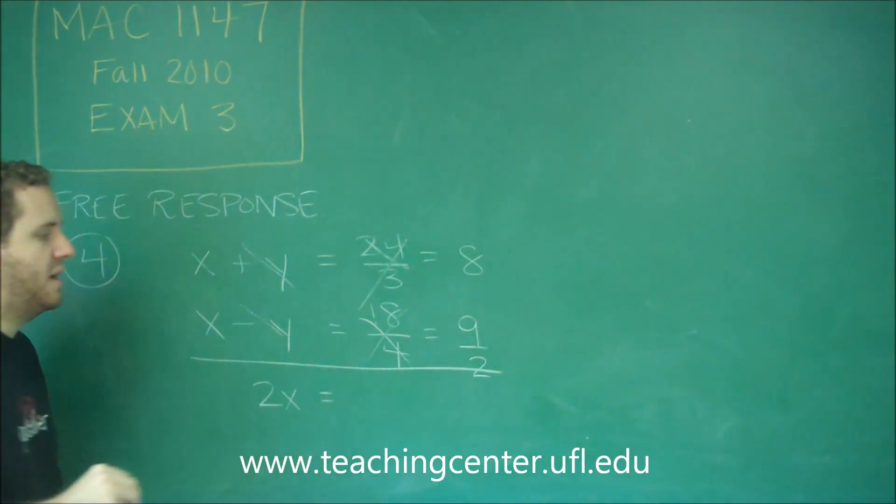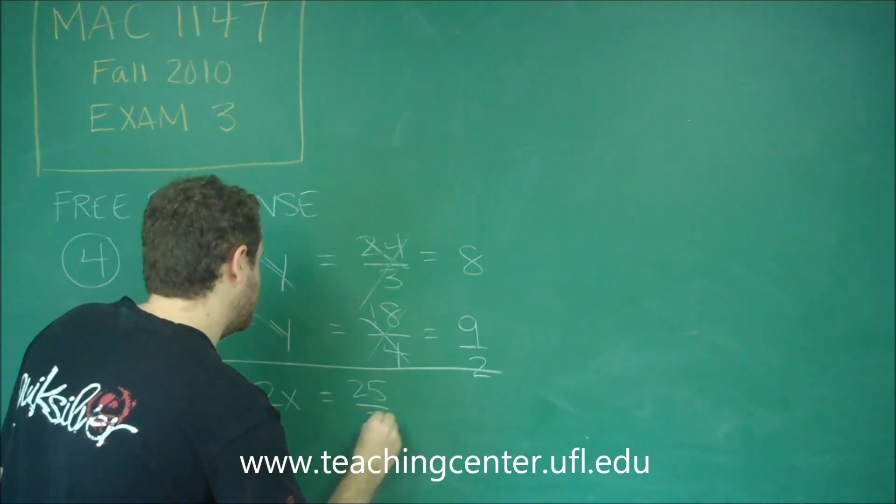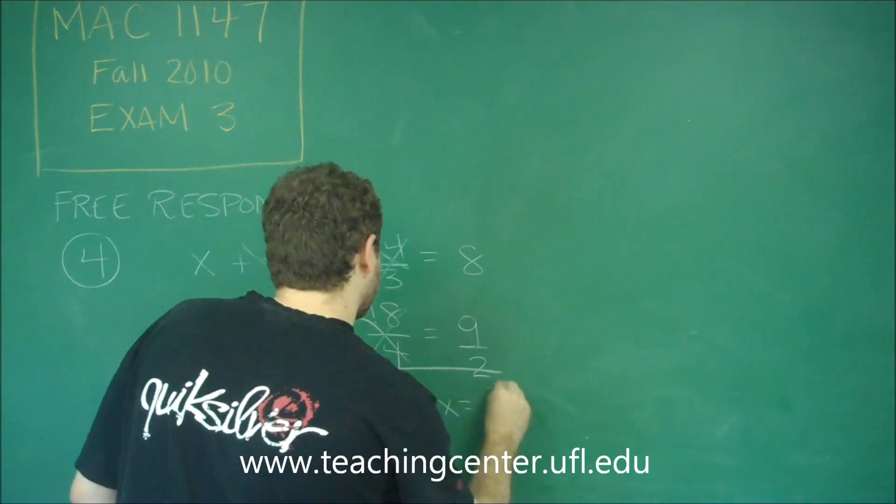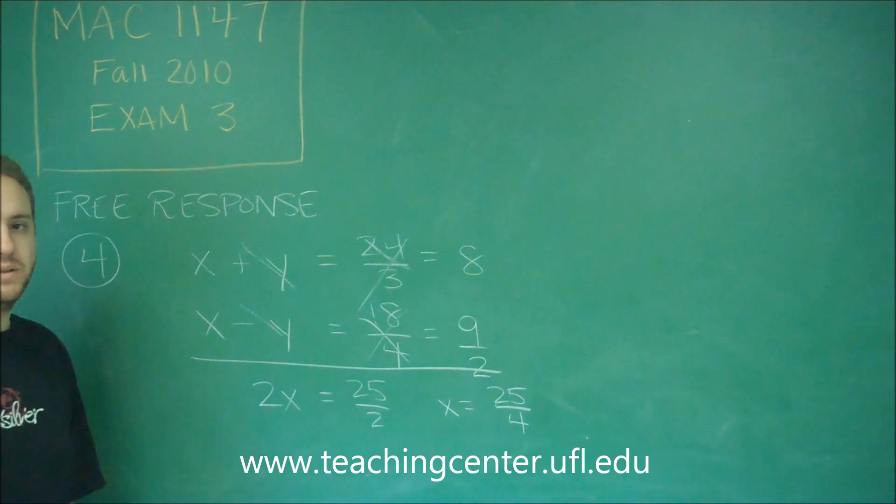So if you want to convert that to all as a fraction, 8 is 16 over 2. So combining those together would give you 25 over 2, which tells you that x equals 25 over 4, if you divide by 2.